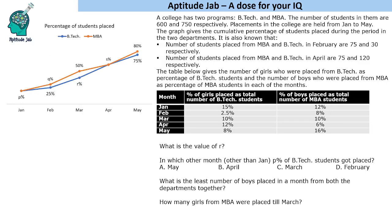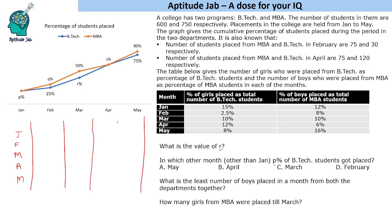This graph is a cumulative graph and we have some variables like V, Q, R being used. We are asked the value of R, and asked to use the value of P and a couple more questions. So how do we proceed? We will make a table with month-wise placement — January, February, March, April, and May — and we will also track cumulative placement. We will do both for MBA and BTEC.